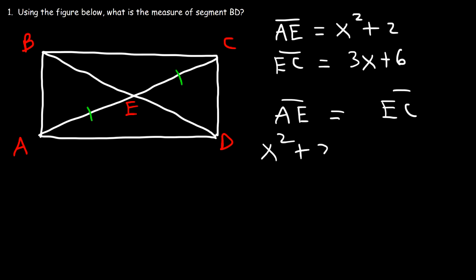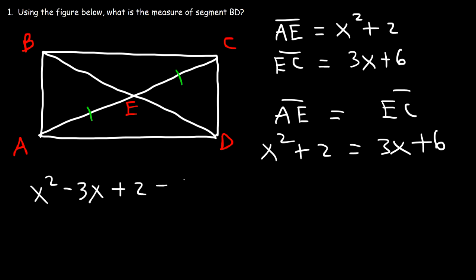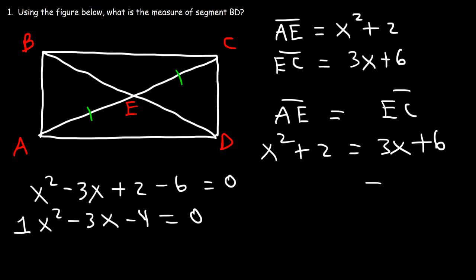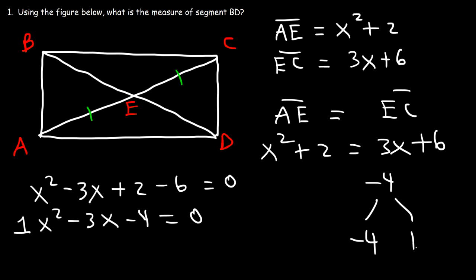Setting AE equal to EC gives us: x squared plus 2 equals 3x plus 6. Moving everything to the left side: x squared minus 3x minus 4 equals 0. We need to factor this trinomial — two numbers that multiply to negative 4 and add to negative 3 are negative 4 and positive 1. So it factors as (x minus 4)(x plus 1) equals 0.